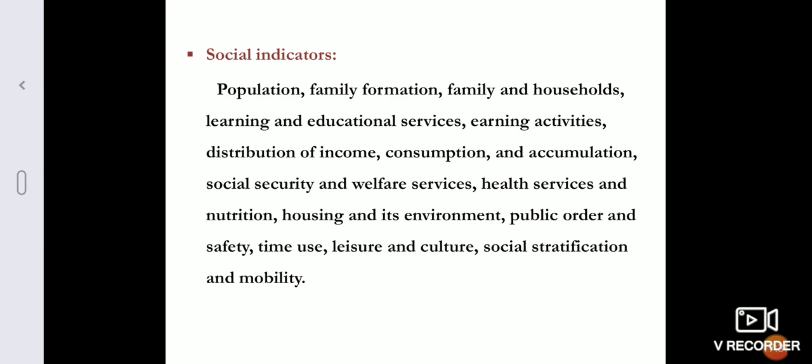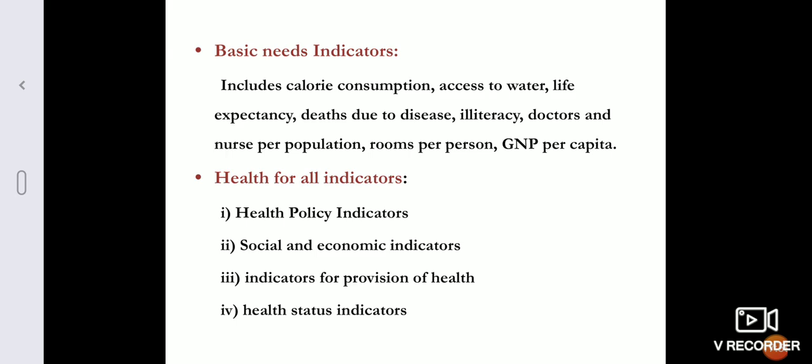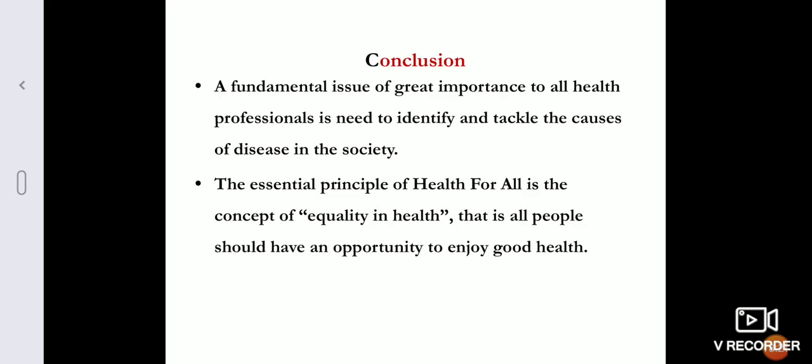Basic needs indicators include calorie consumption, access to water, life expectancy, deaths due to disease, illiteracy, and number of doctors. Health-for-all indicators cover health policy indicators, social and economic indicators, indicators for provision of health, and health status indicators. Millennium Development Goals indicators are also part of this framework and can be found in detail in the Park textbook under different headings.